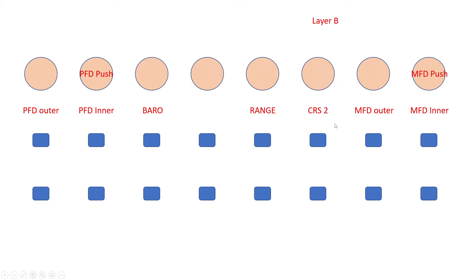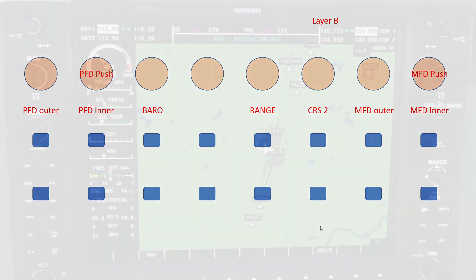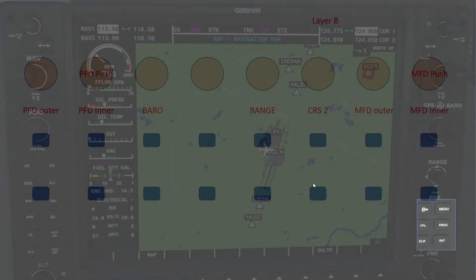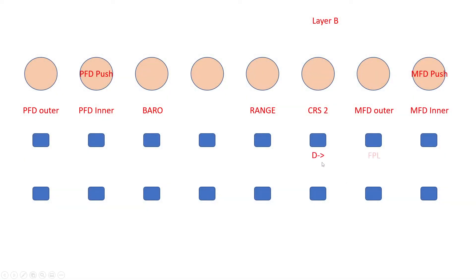So now back to these soft push buttons. This time I'm going to look at the flight planning buttons: the direct-to flight plan, clear. Now you probably know the clear button has two functions — a quick press and a long press. One to clear an entry and the long press to put it back to its default setting. So we'll need to allocate two functions to that button later.